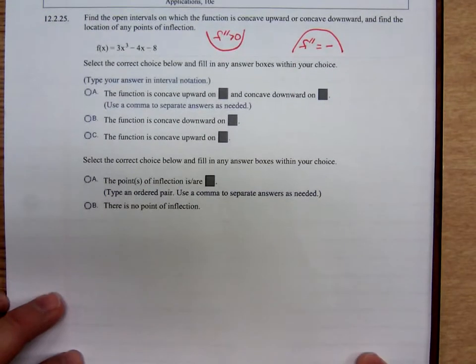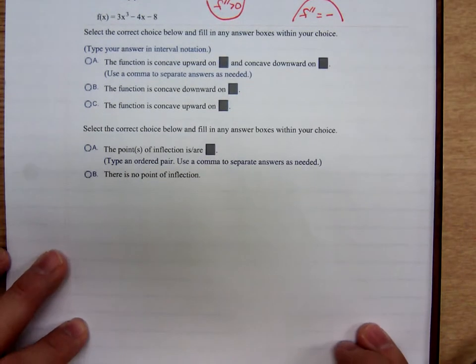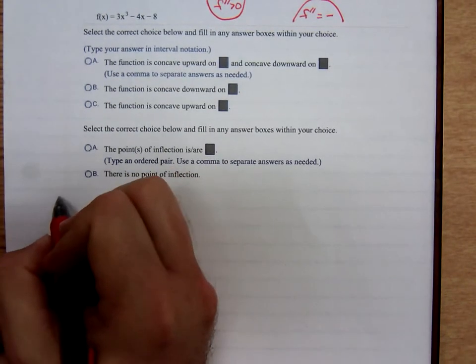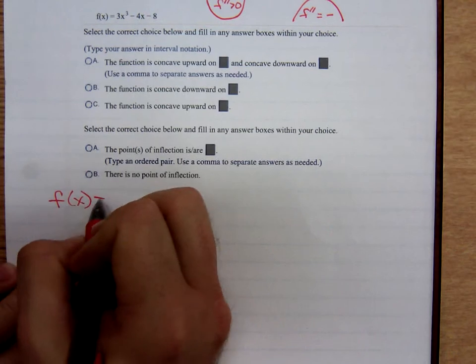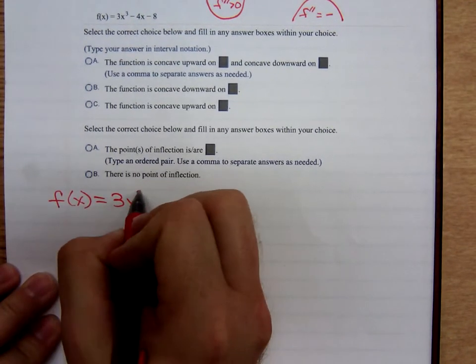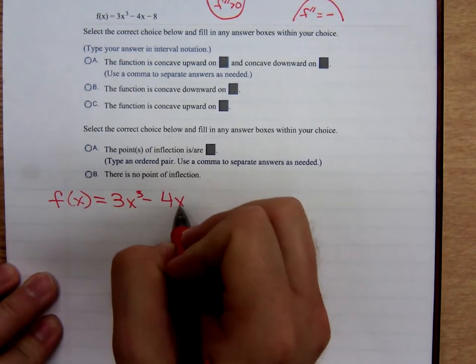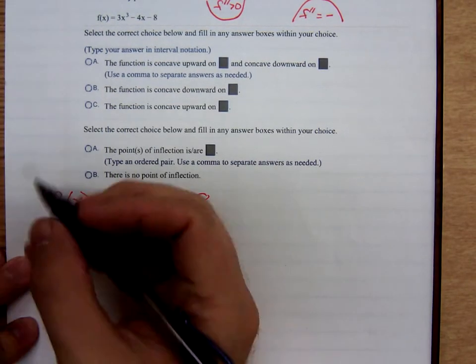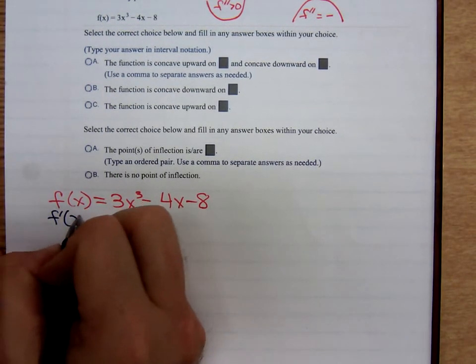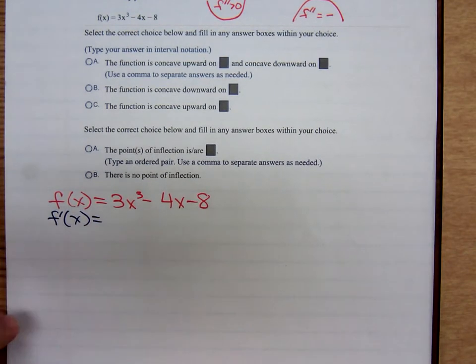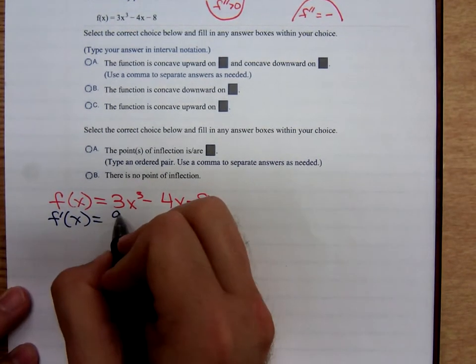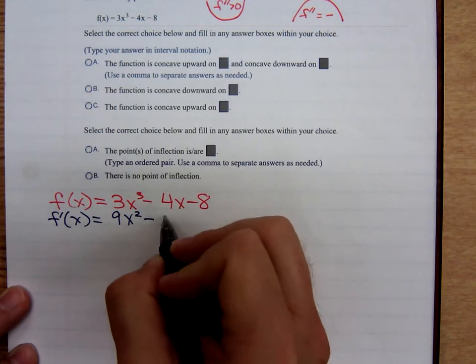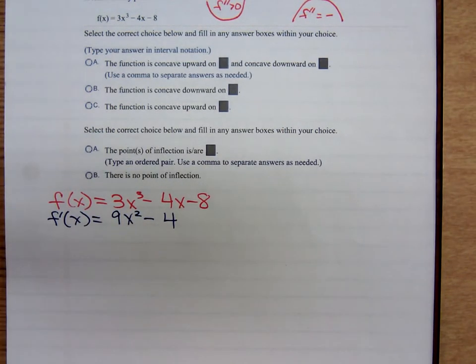Let me move this up. There's my function. Let me rewrite it: 3x³ - 4x - 8. We find f prime. Before we find the second derivative, we have to find the first derivative. That's 9x² - 4. Then, we find f double prime.